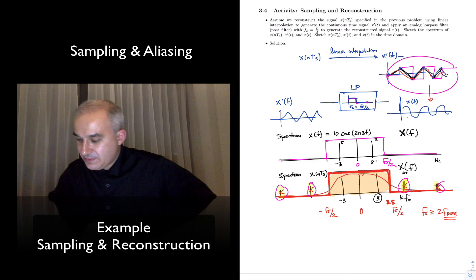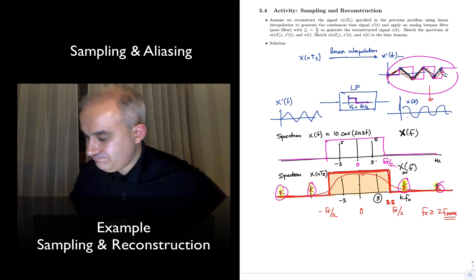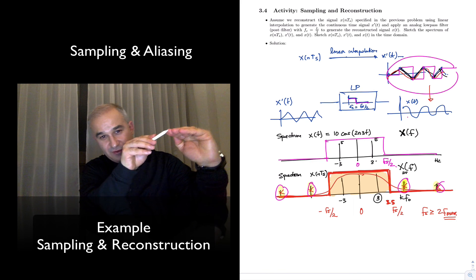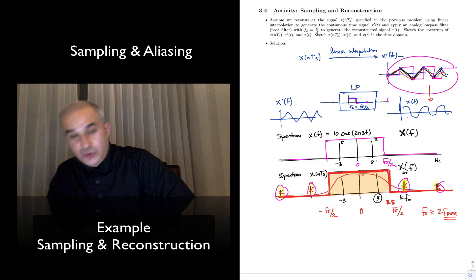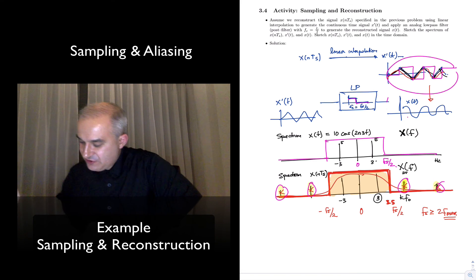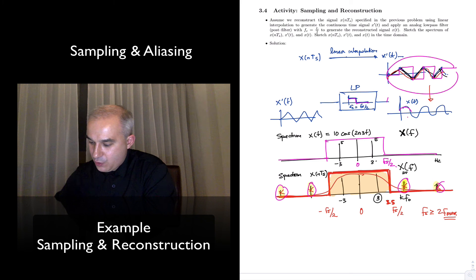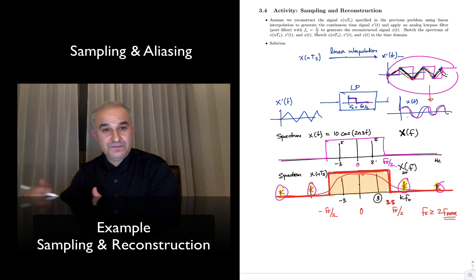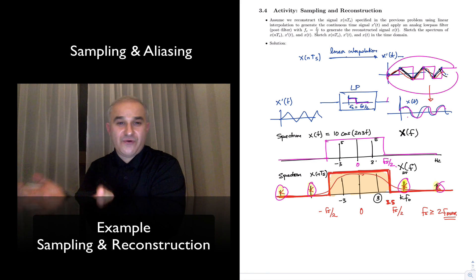So it is not that important what type of interpolator you use practically — you are going to use the easiest one to make. That's why sometimes you will just use a hold circuit, where you get that value, keep it until you get another value. Everything is going to be about this post filter. You could avoid the post filter, but in that case you would need to be adding a sinc function — and if you add that, you already get the reconstruction. And why is that? You are going to see in future playlists, because the sinc and the rectangle — meaning the filter — are Fourier transform pairs of one another.